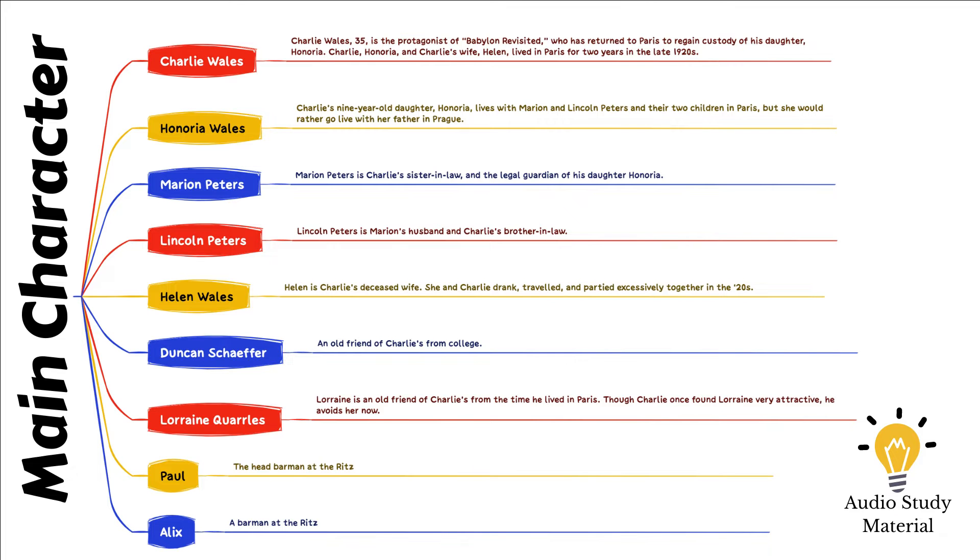Charlie and Marion exchange a frosty greeting. Lincoln asks Charlie about business in Prague, and Charlie says that it's going well. His salary was even larger last year than it had been before the crash. Although he is boasting for a specific purpose, he realizes that it concerns Lincoln and stops himself.